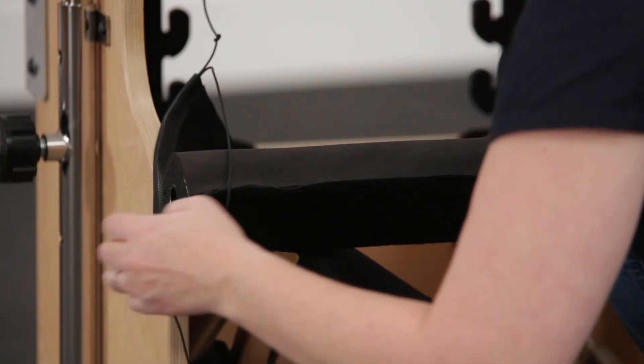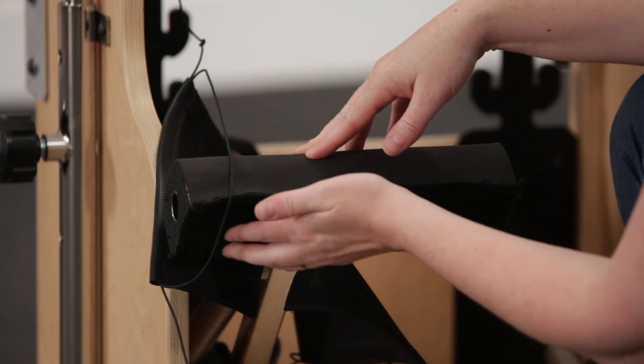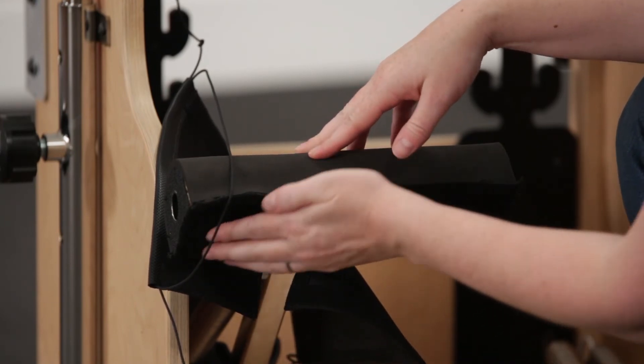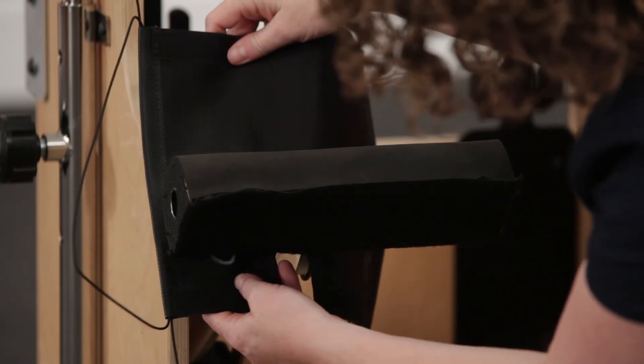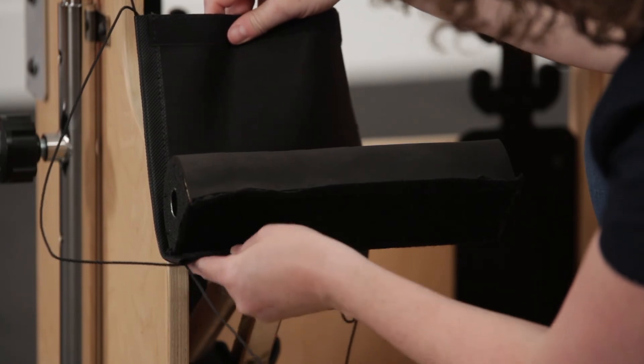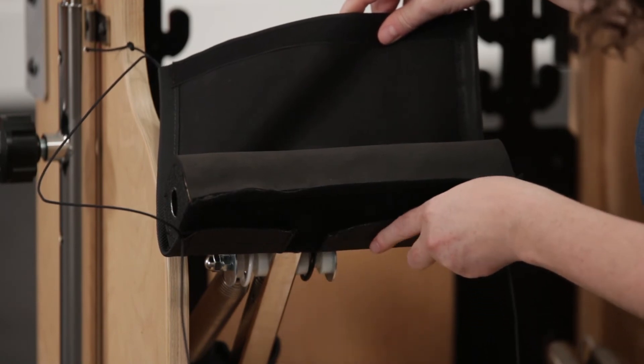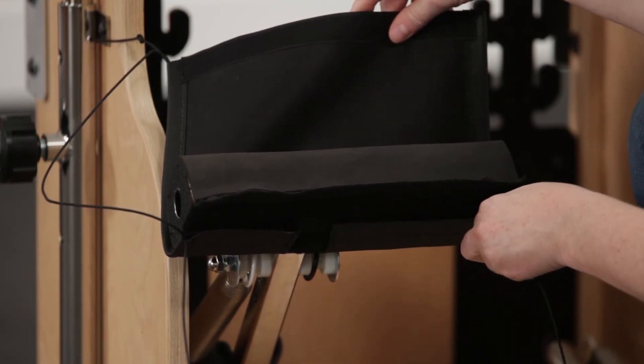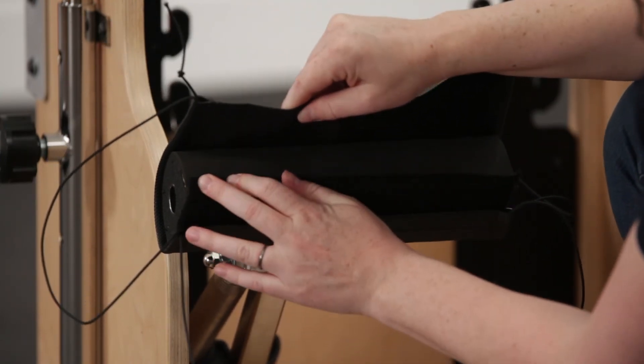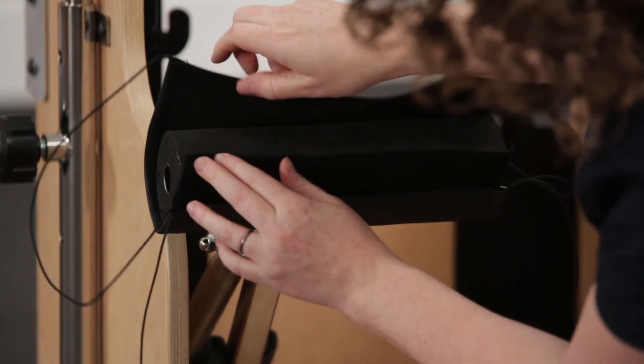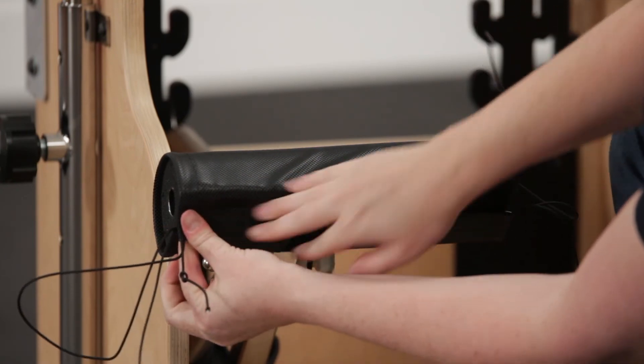Now when we velcro the back, we're going to make sure that we are pulling the velcro that's on the pedal around the corner to make this corner smooth. Yep, just like that, and then we'll come across. There we go. Now we can come over the front. I'm going to pull that velcro up and the cover over, just like that.